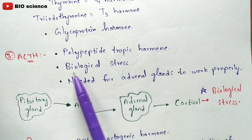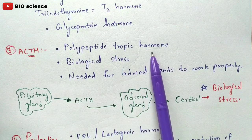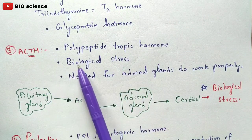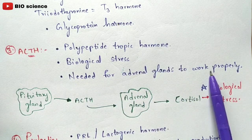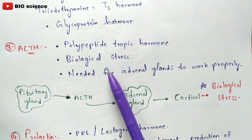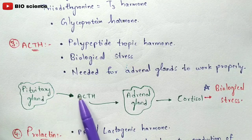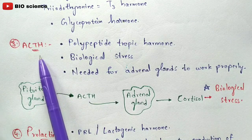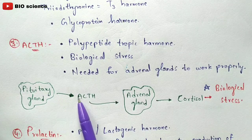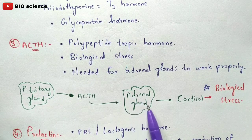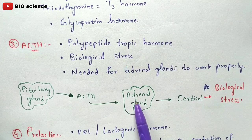The third hormone is adrenocorticotropic hormone (ACTH). It is a polypeptide tropic hormone responsible for biological stress, and it is needed for the adrenal glands to work properly. The adrenal gland is present in the upper region of the kidney.